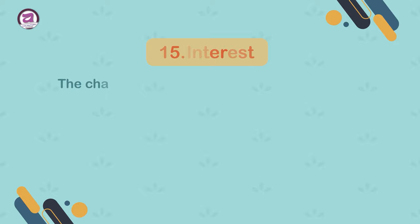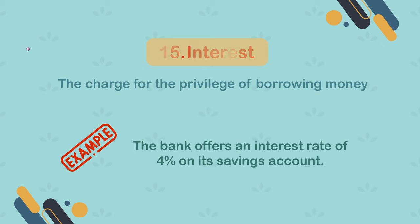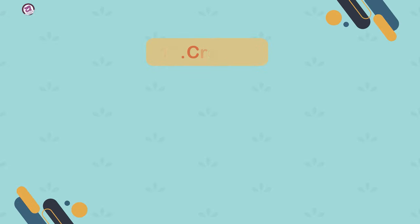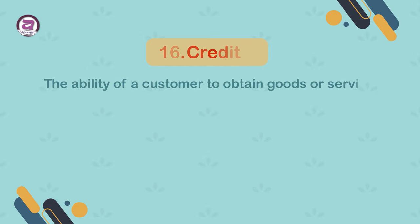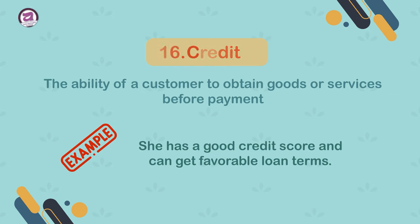15. Interest. The charge for the privilege of borrowing money. Example: the bank offers an interest rate of 4% on its savings account. 16. Credit. The ability of a customer to obtain goods or services before payment. Example: she has a good credit score and can get favorable loan terms.